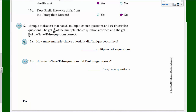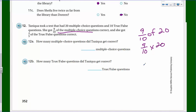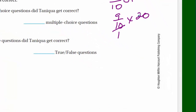Problem 12: Tanika took a test with 20 multiple-choice questions and 10 true-false questions. She got nine-tenths of the multiple-choice questions correct and four-fifths of the true-false questions correct. How many multiple-choice questions did she get correct? Nine-tenths of 20: nine-tenths times 20. I can see a common factor of 10 - divide 10 into the denominator, making it 1, and divide 10 out of 20, leaving 2. Nine times 2 equals 18. She got 18 out of 20 correct - that's 90 percent!